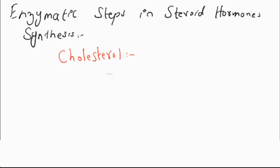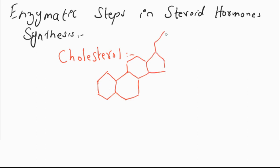Firstly, I will draw the structure of cholesterol. Cholesterol is a 27-carbon structure with a side chain. I am drawing the structure of cholesterol. This is the OH group, rings A, B, C, and D, and this is the cholesterol side chain.